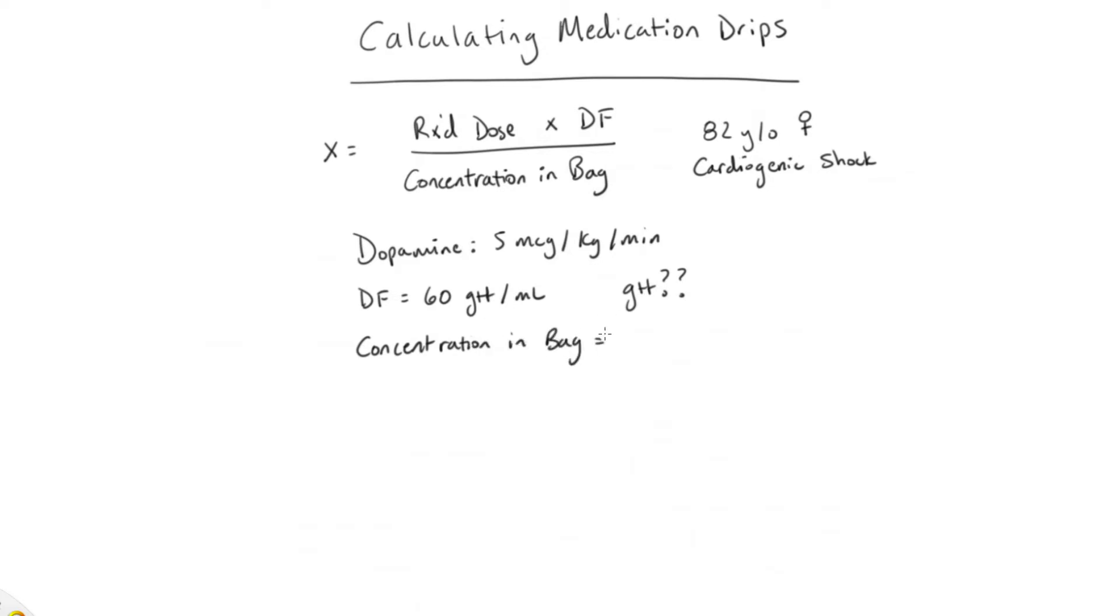We're going to start out with a drip set of 60 drops per mil, so this would be a micro set. And if you haven't seen this before, you might be wondering, what is GTT? GTT is actually a shortened version of the word gutte in Latin, which means drip. So you learn something new.